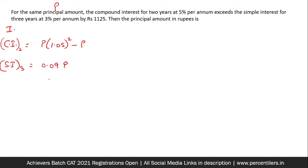Now the subtraction of these two is 1.125. So taking P common, 1.1025 minus 1 minus 0.09. So from here you get P as 90,000 and that gives you your answer. This is what has been asked.